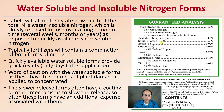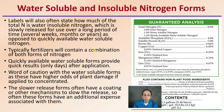Labels will often state how much of the nitrogen is water-insoluble, which is slowly released over a long period of time — typically several weeks, months, or even potentially years — as opposed to quickly available water-soluble nitrogen. Fertilizers will typically contain a combination of both forms. Quickly available water-soluble forms allow for quick results: about three days after application you can see a change in the plants. A word of caution with water-soluble forms, as these have higher odds of plant damage if applied too concentrated.